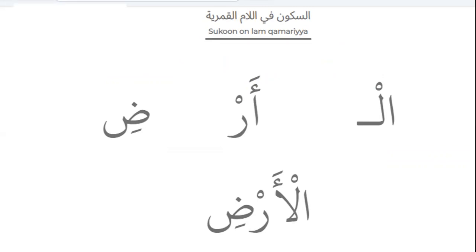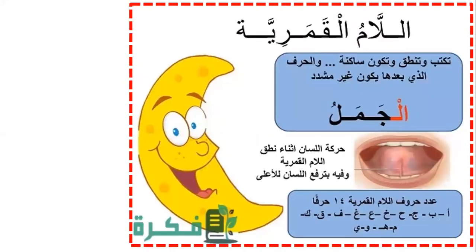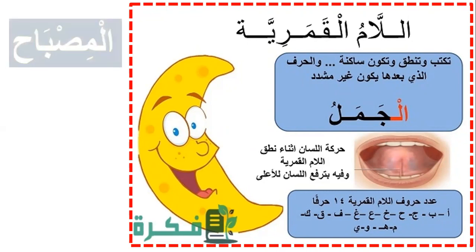Lam-Kamariya has sukun. Example: 'al-ardi.' Lam-Kamariya is both a written and pronounced sound — you can write it and pronounce it. It has sukun and is not followed by a mushadad letter. The letter after Lam-Kamariya can be any one of the following 14 letters: Alif, Ba, Jim, Ha, Kha, Ayn, Ghayn, Fa, Qaf, Mim, Ha, Waw, Ya.